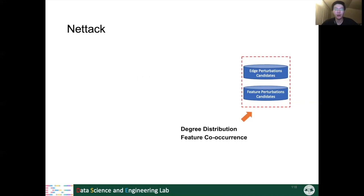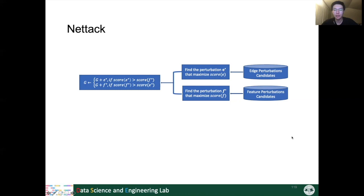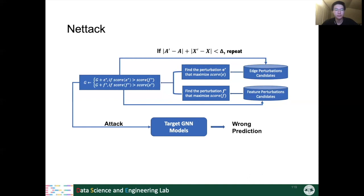NetAttack generates attacks by: generating candidate perturbations that do not violate degree distribution or feature co-occurrence, then choosing perturbations that maximize the classification margin — the score difference between other classes and the true label. If the score is large, the probability of misclassification is large. The graph is modified according to the chosen perturbation, repeating until reaching the perturbation constraint, yielding the final perturbed graph that can fool the GNN.